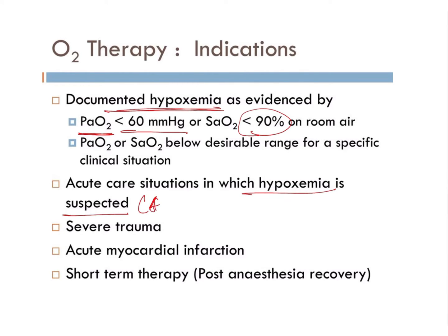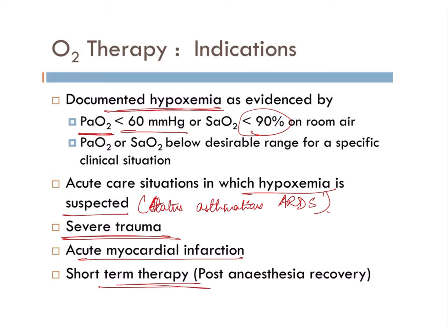The second indication is acute care situations in which hypoxemia is suspected, such as status asthmaticus and ARDS (acute respiratory distress syndrome). Third is severe trauma, where the patient is unable to voluntarily control breathing, and in head and neck fractures if the tongue falls back onto the pharynx the patient would be unable to breathe. Fourth is acute myocardial infarction. The last is short-term therapy for post-anesthesia recovery, especially in patients given conscious sedation with nitrous oxide, where diffusion hypoxia occurs.